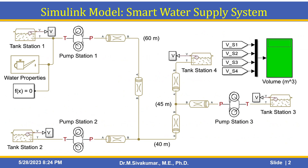Let us see the model. This is a simulated model — you can see there are four tank stations: tank station 1, tank station 2, tank station 3, and tank station 4. Here there are three pumping stations: pump station 1, pump station 2, and pump station 3.